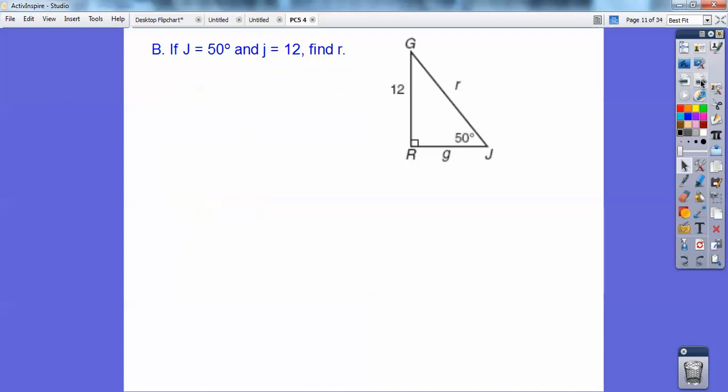Okay, you did that in geometry, and you're doing it again. So this time, if J is 50, and small j, which is over here, is 12. Remember, small j is always opposite big J. Small g is always opposite big G. Small r is always opposite big R. So find angle R. So this one's going to be a sine ratio, opposite over hypotenuse. So this is a sine ratio. Should get about 15.7.